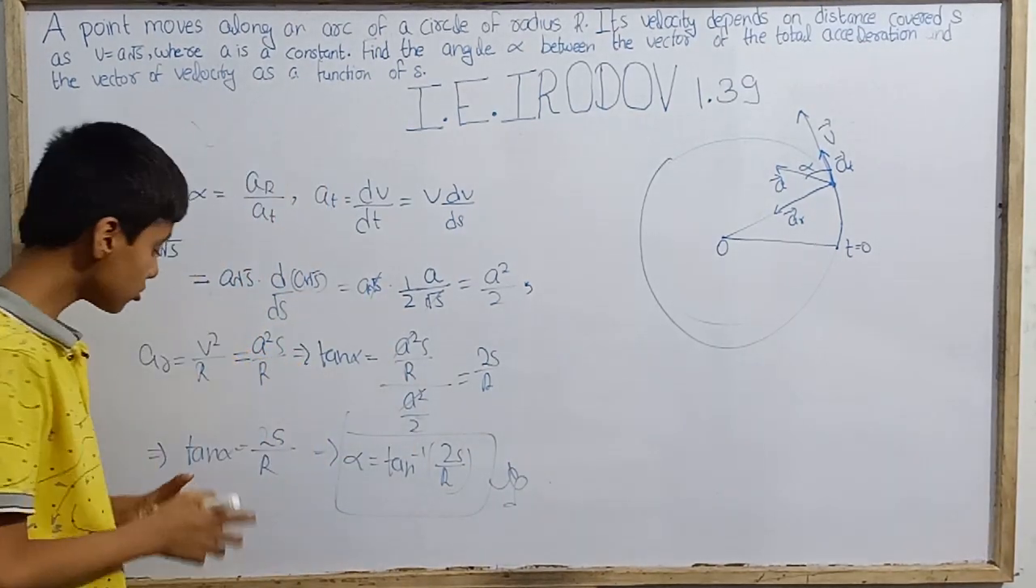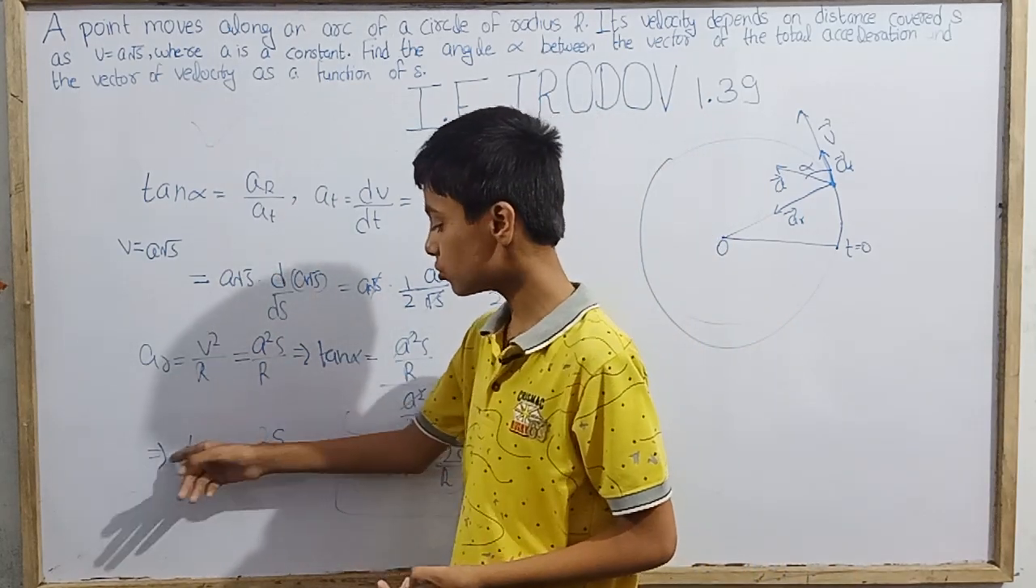The problem is solved. Although jo Irodov ki textbook hai usmein ye answer bataya gaya hai, lekin actually humein alpha ki value batani instead of tan alpha. So if you want, you can write tan alpha equals 2s by r, koi bhi samajh lega. We have gone through this and finally computed the value of tan alpha. Lekin agar aapko really alpha ki hi batani, you need to use tan inverse of 2s upon r. That was the solution to this problem. Hope you liked and enjoyed today's video, and thanks to you. Jai Hind, thank you.